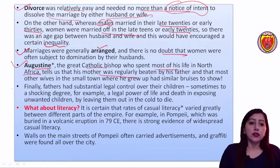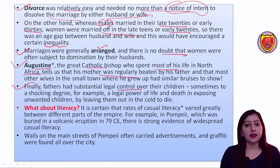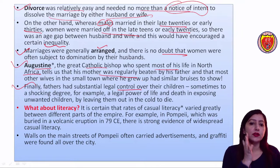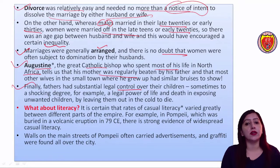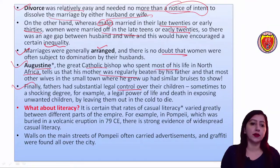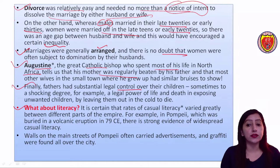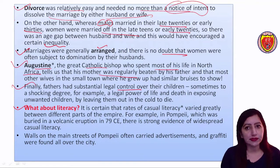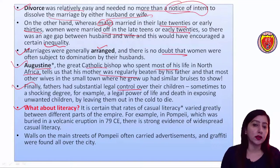Fathers had legal control over their children — including a legal power of life and death, determining whether children would live or be abandoned. Unwanted children could be left to die. The rate of casual literacy varied greatly between different parts of the empire.